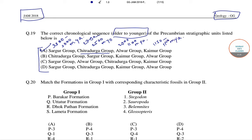So the correct chronological sequence from older to younger is: Sargur group, then Chitradurga group, then Alva group, and lastly Kaimur group. So the correct answer is option number A.